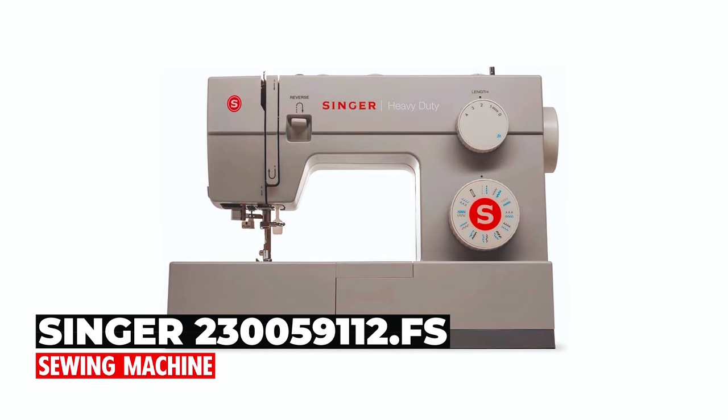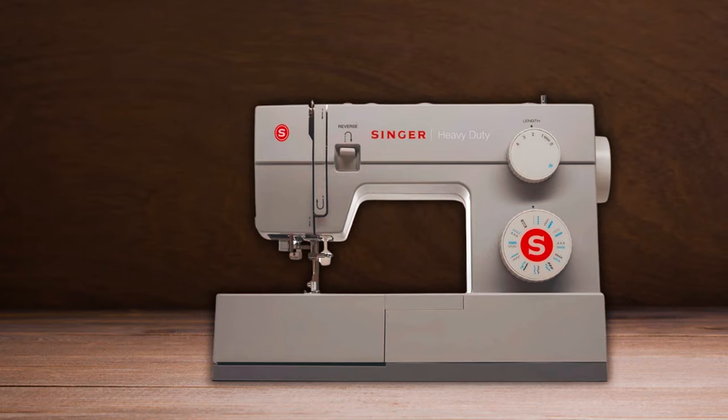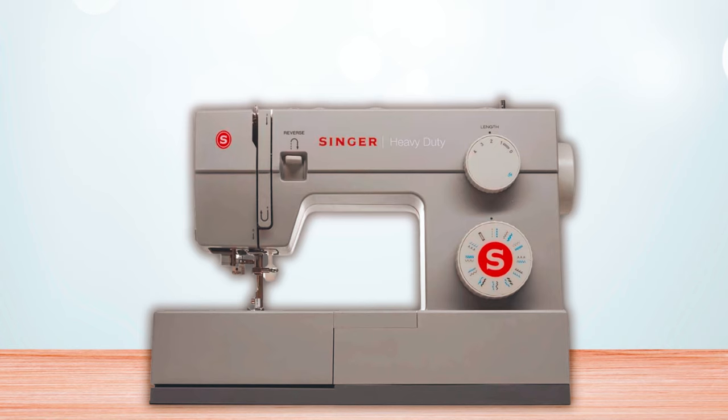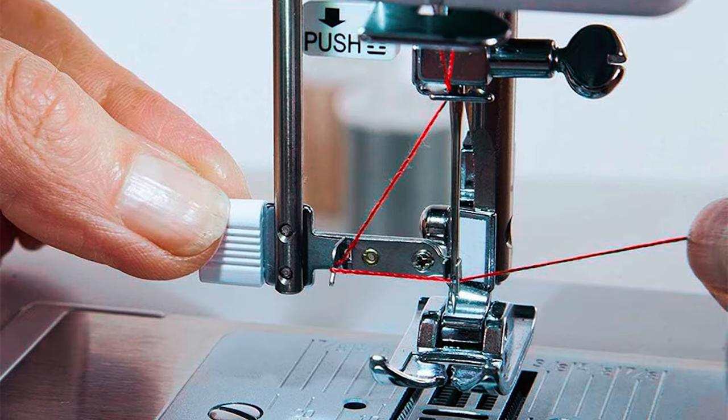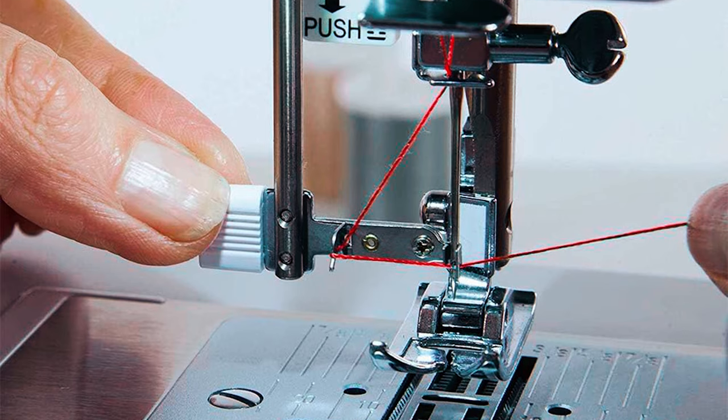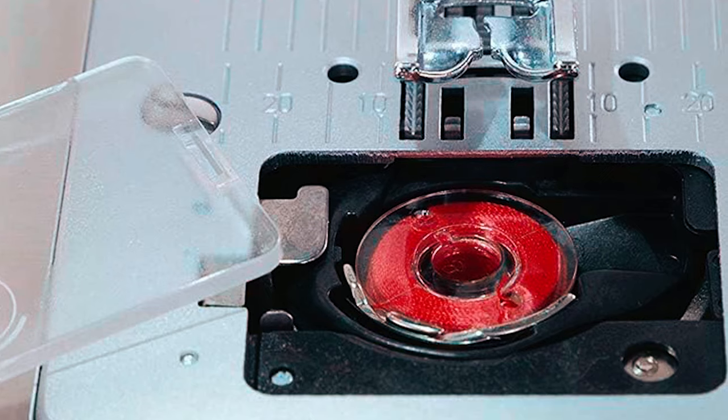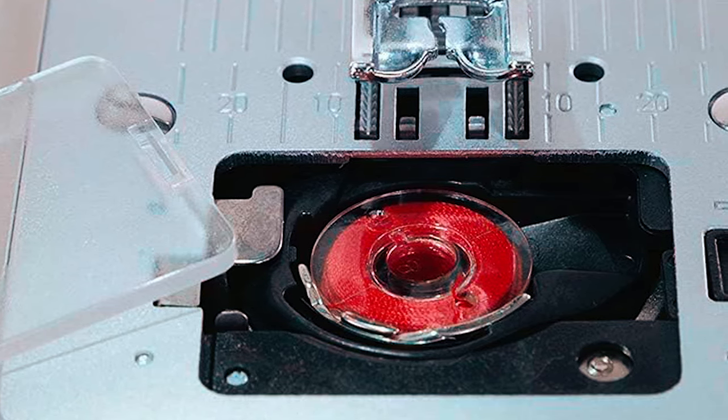Singer 230059112.FS Sewing Machine. The dimensions of the sewing machine made by Singer are roughly 13.5 by 18 by 9 inches and it weighs just under 18 pounds. This is a light-to-medium-duty machine with a heavy-duty metal frame and stainless steel bed plate. It features a top drop-in bobbin with a clear cover and automatic winding, making it easier to insert and remove the bobbin.